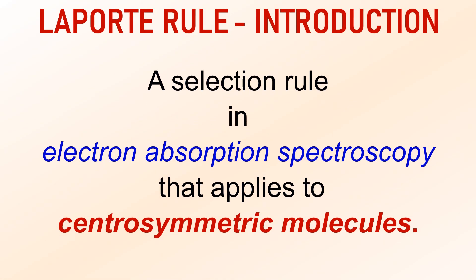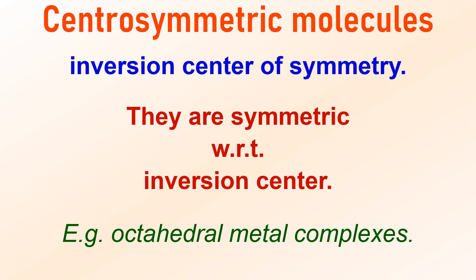The Laporte rule is a selection rule in electron absorption spectroscopy that applies specifically to centrosymmetric molecules. Selection rules guide us in determining whether a transition between two energy states is allowed or forbidden. Centrosymmetric molecules possess an inversion centre, meaning they are symmetric with respect to that point. This symmetry implies that every part of the molecule has a corresponding counterpart mirrored through that centre. An example of such a structure is found in octahedral metal complexes.